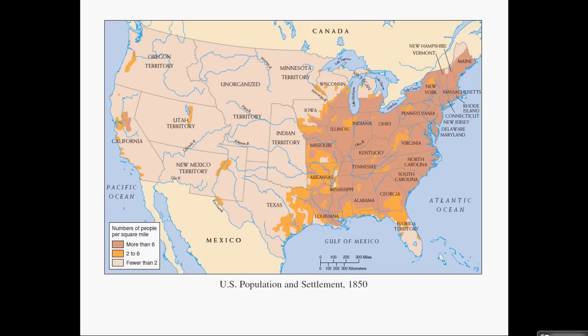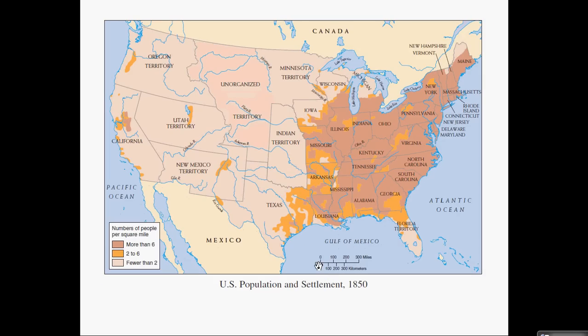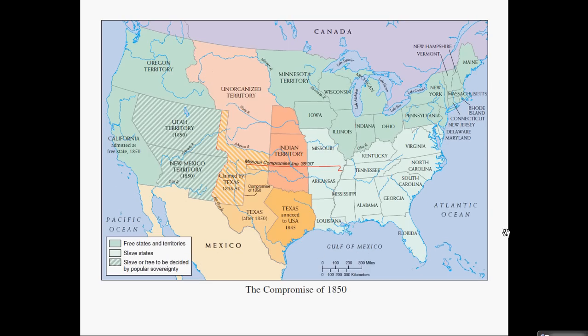Quick recap: Population density is much bigger in the North — the only reason it's as large as it is in the South is because of the slave population. The Compromise of 1850 came right after the Gold Rush and the Mexican-American War. California is a free state, no slavery in the District of Columbia. The Missouri Compromise Line still stands, but popular sovereignty is enacted. Texas slightly changes due to the border settlement. The Fugitive Slave Act is more tightly enacted — it already existed, but they enforce it more strictly after that, and it's a federal law, not a state law.